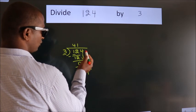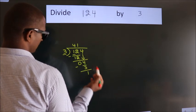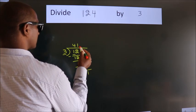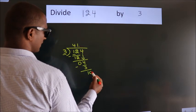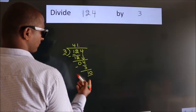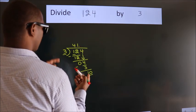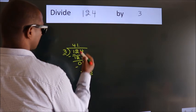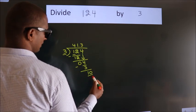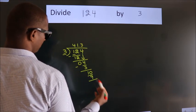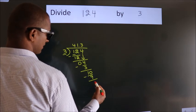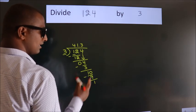After this, no more numbers to bring it down. So what we do is we put dot, take 0. So 10. A number close to 10 in 3 table is 3 3s, 9. Now we subtract. We get 1.